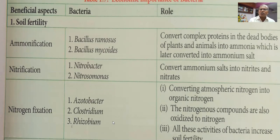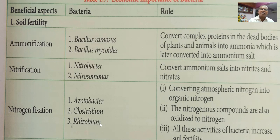Rhizobium is a root nodule bacterium seen in leguminous plants. It leads a symbiotic mode of nutrition. Through atmospheric nitrogen conversion to organic nitrogen, and oxidation of nitrogen compounds, all these activities of bacteria increase soil fertility. It is very important.